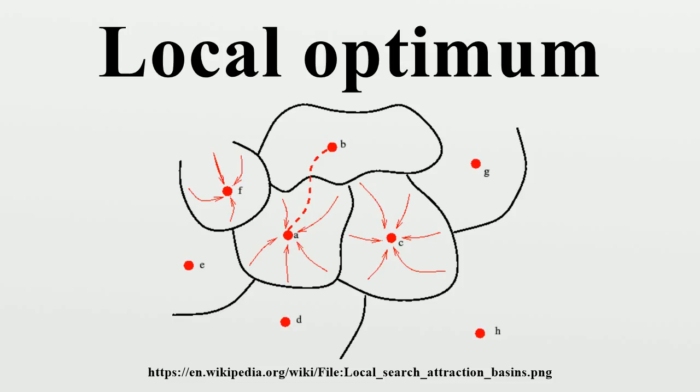The locality of the optimum is dependent on the neighborhood structure as defined by the local search method that is used for optimizing the function. In many cases,